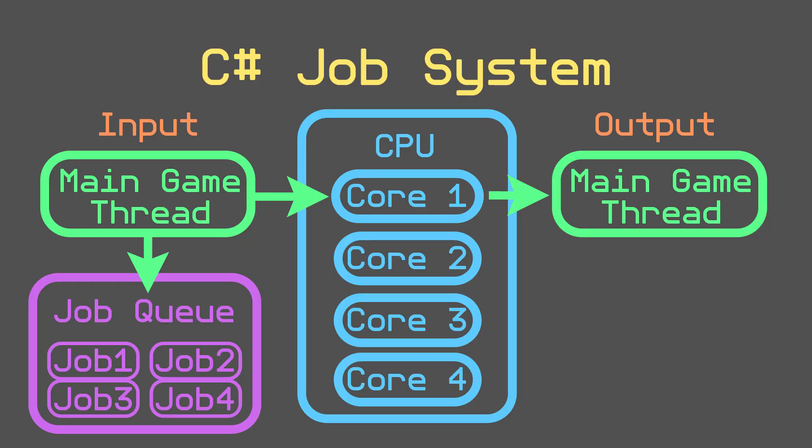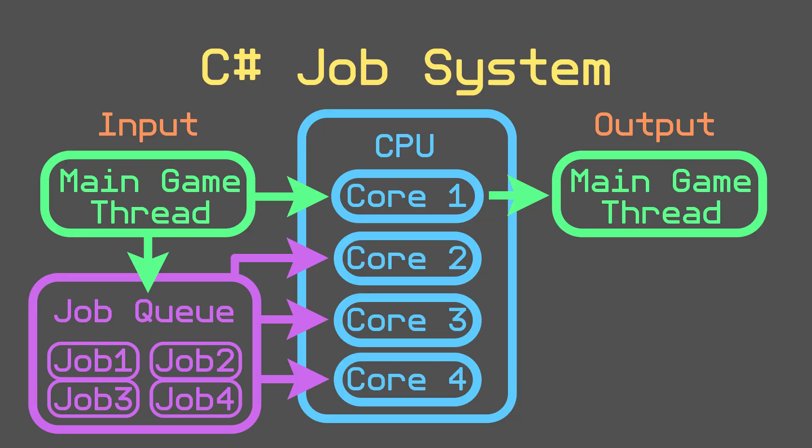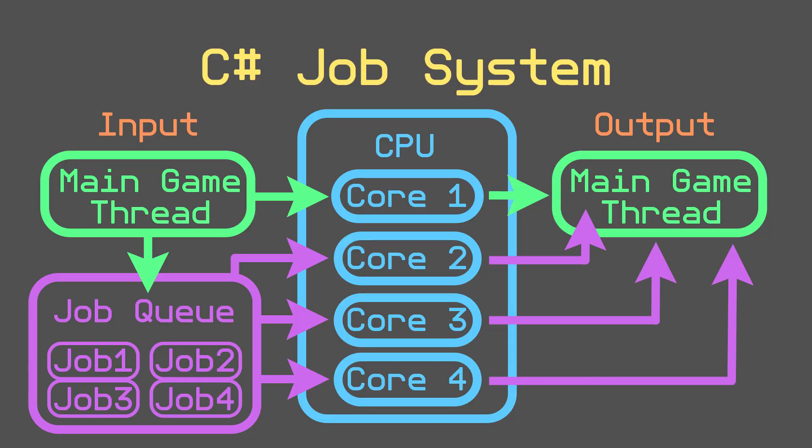Once we've created our job, the next step is to schedule it. Scheduling queues it up within the job system, and the job system assigns it to different worker threads. These worker threads are otherwise idle CPU cores that pull from the queue, run the jobs, and return the results back to the main thread.